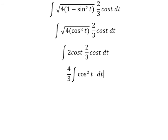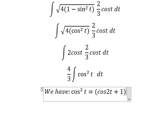Next, we have the formula in here: cosine t squared equals cosine 2t plus 1 over 2.